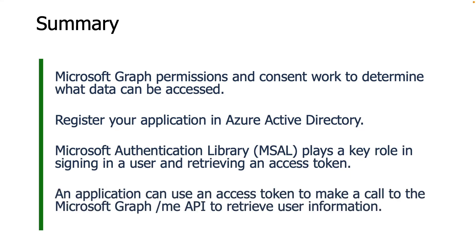Finally, we saw how an application can use an access token to make a call to the Microsoft Graph /me API to retrieve user information — in this case, the user profile — and then rendered the display name.